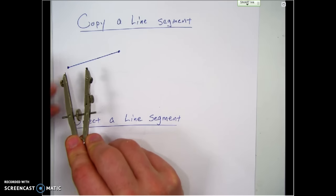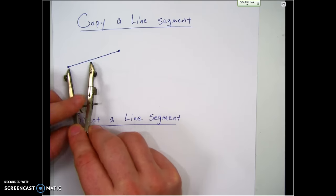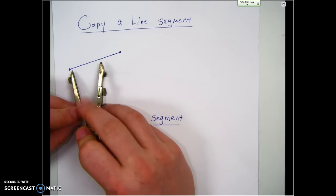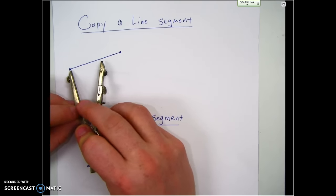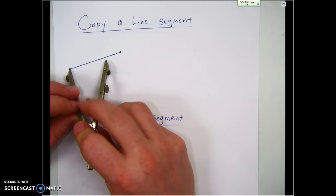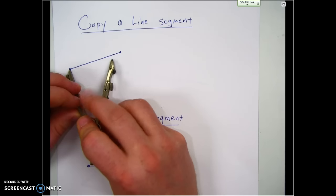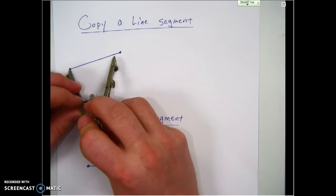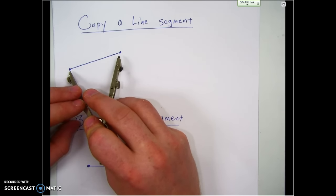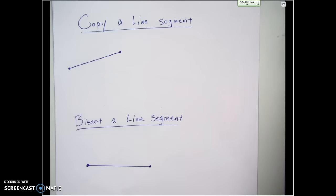I'm going to take my compass and put the pointy end at one end point of my line segment. I need to make my compass as wide as the line segment is long. If I don't change the width of the compass, it's not going to change the length of the line segment. So here I'm setting the width of my compass to the length of that line segment.